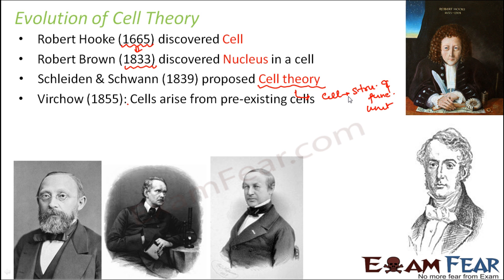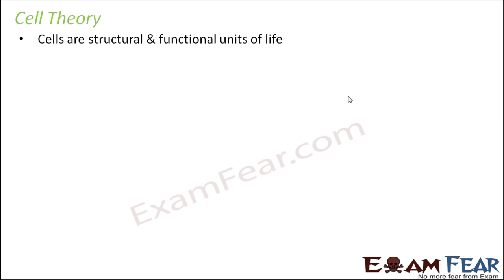Over a period of time there were so many advancements related to the cell. In 1665 the cell was first seen by Robert Hooke, who named them cells. Then different scientists discovered different parts and components of the cell, and the cell theory came into picture in 1839, which was later modified by Virchow. The cell theory primarily states that cells are the structural and functional units of life — the basic statement given by Schleiden and Schwann.